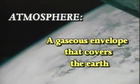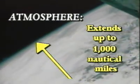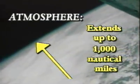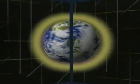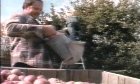The atmosphere is a gaseous envelope that covers the Earth, extending up to 1,000 nautical miles. Without the atmosphere, there would be no life on Earth. The atmosphere provides protection from harmful ultraviolet (UV) rays, cosmic rays, and meteorites. It also protects the Earth from extreme temperature variations, supports animal and plant life through its gaseous content, and provides rain to grow crops.